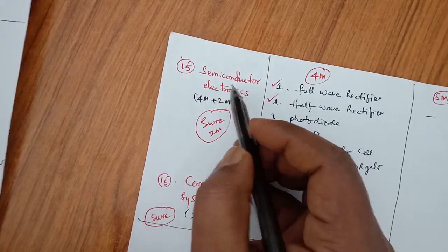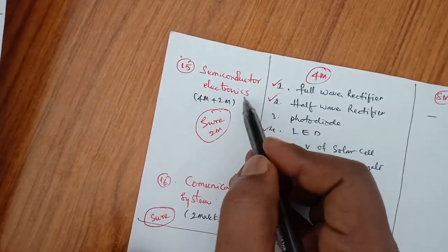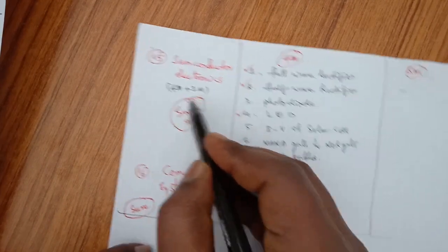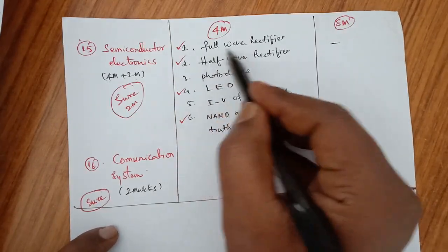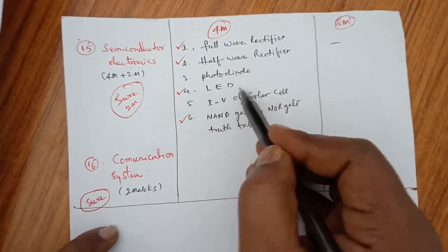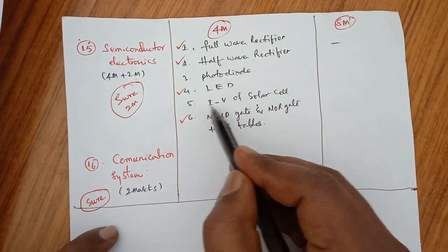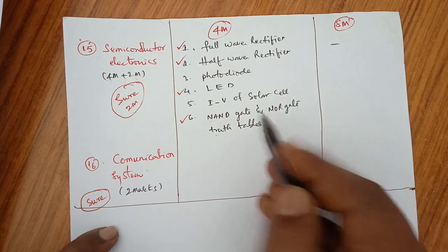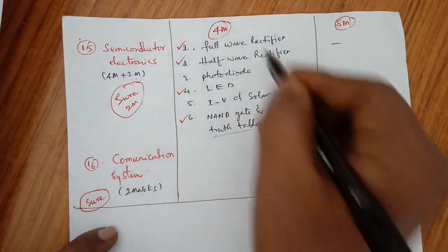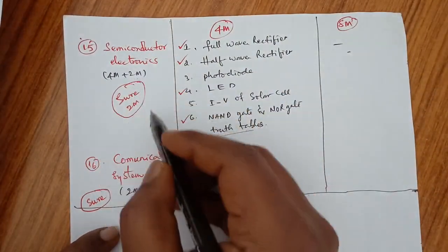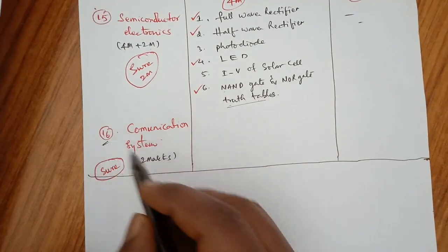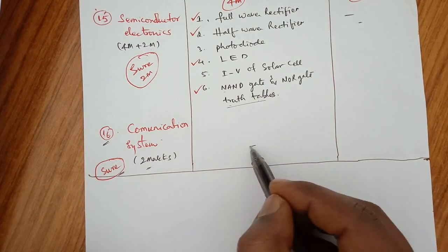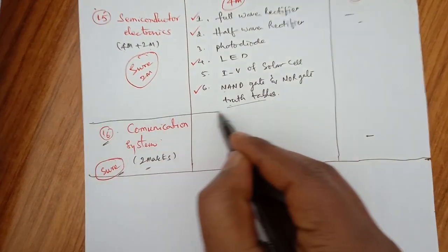Chapter 15 is Semiconductor Electronics, Materials, and Logic Gates. For 4 marks questions: full wave rectifier, half wave rectifier, photodiode, LED, IV characteristics of solar cell, NAND gate and NOR gate truth tables — these are very, very important. There is no 8 marks question. Chapter 16, Communication Systems, is important only for 2 marks questions — there are no 8 marks and no 4 marks questions.